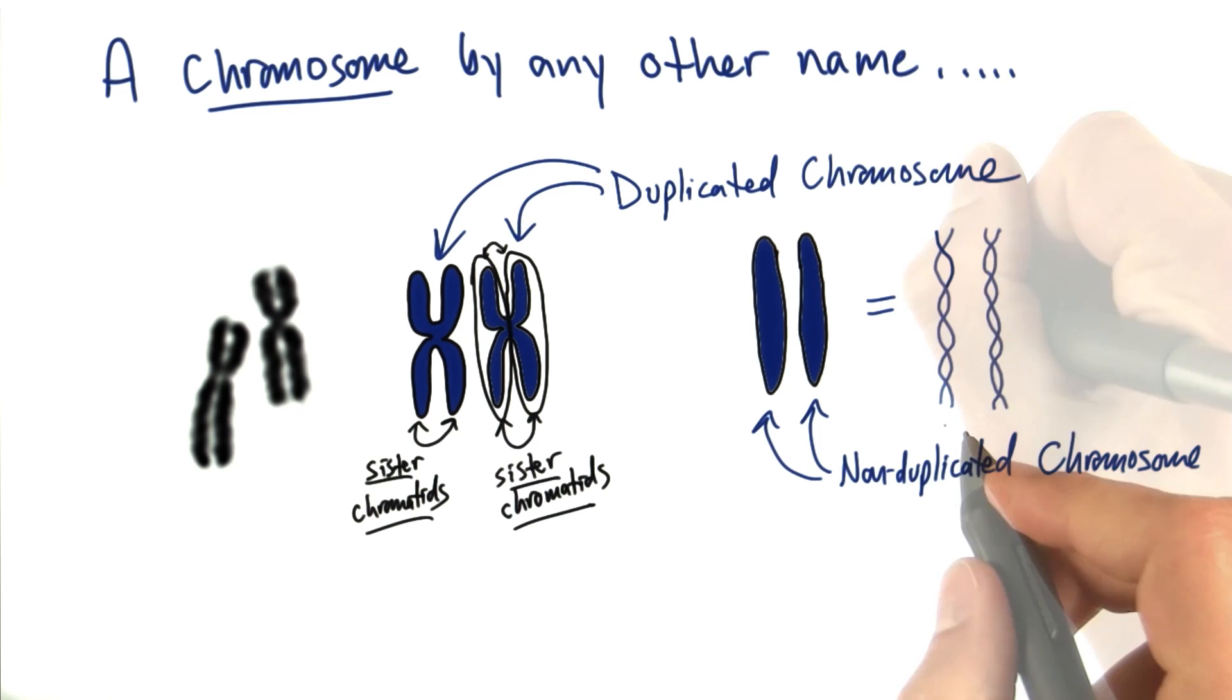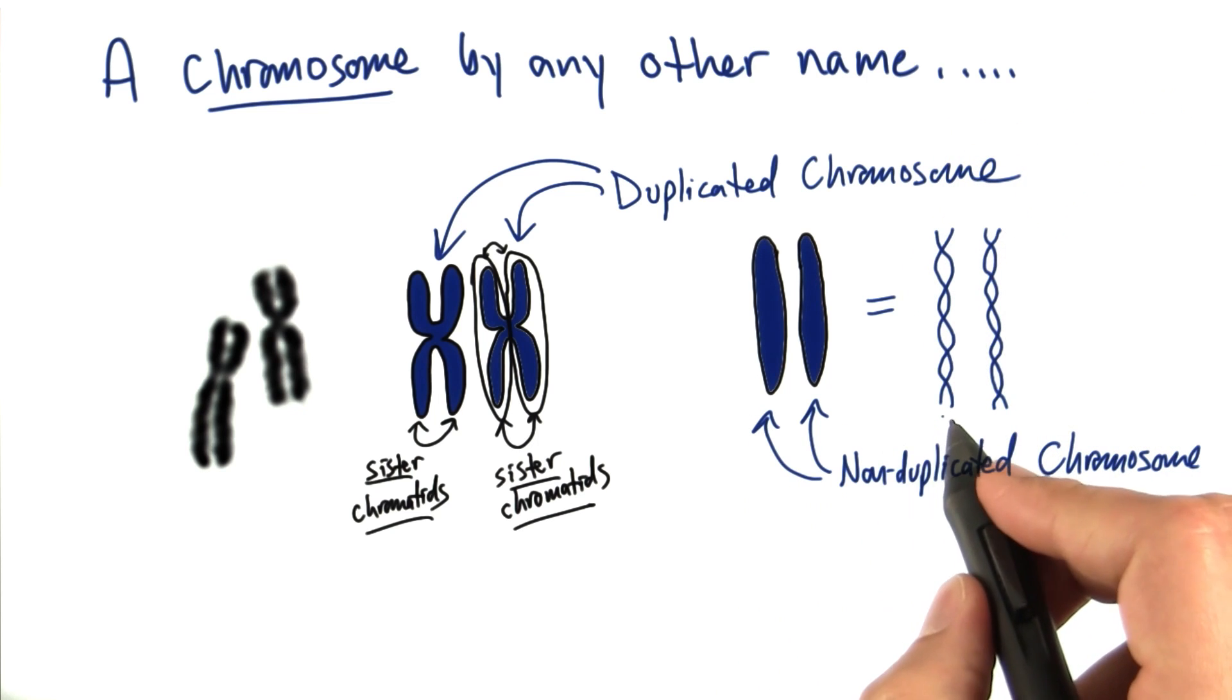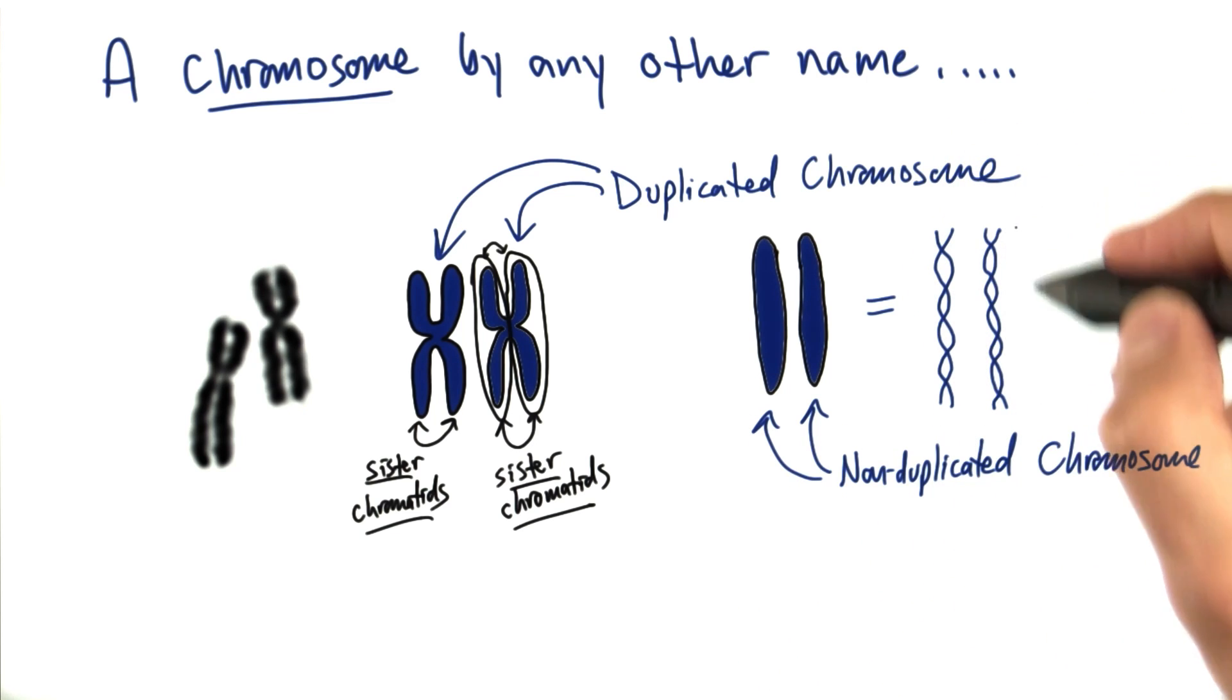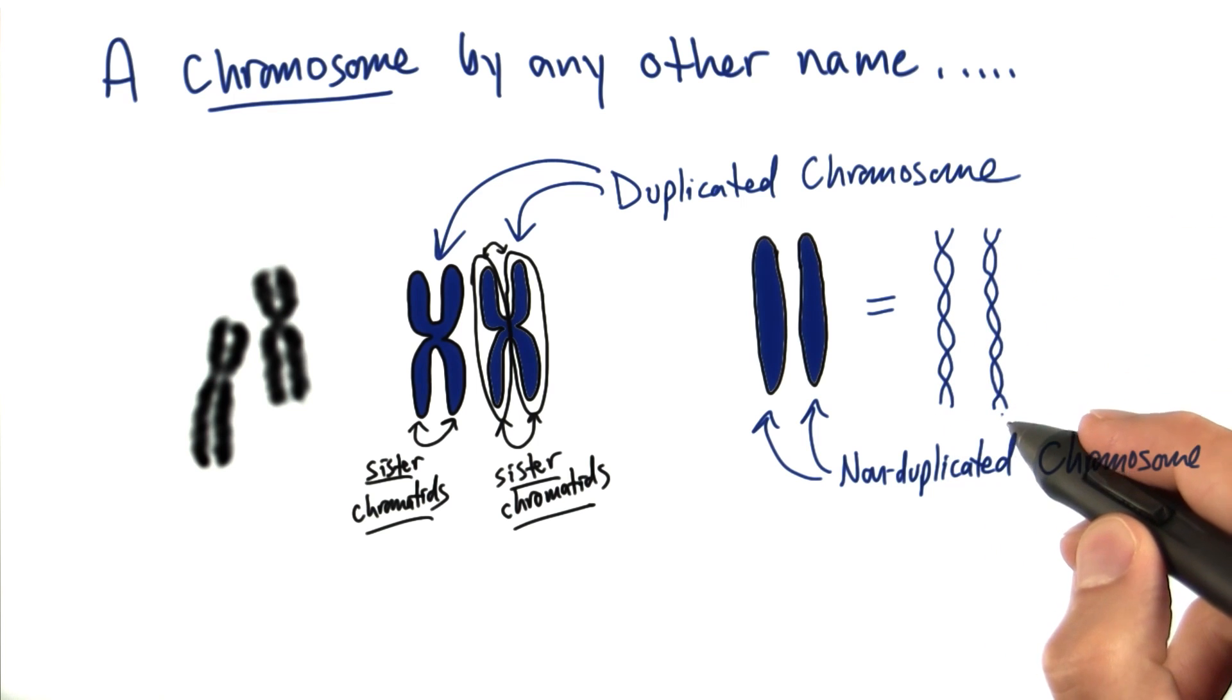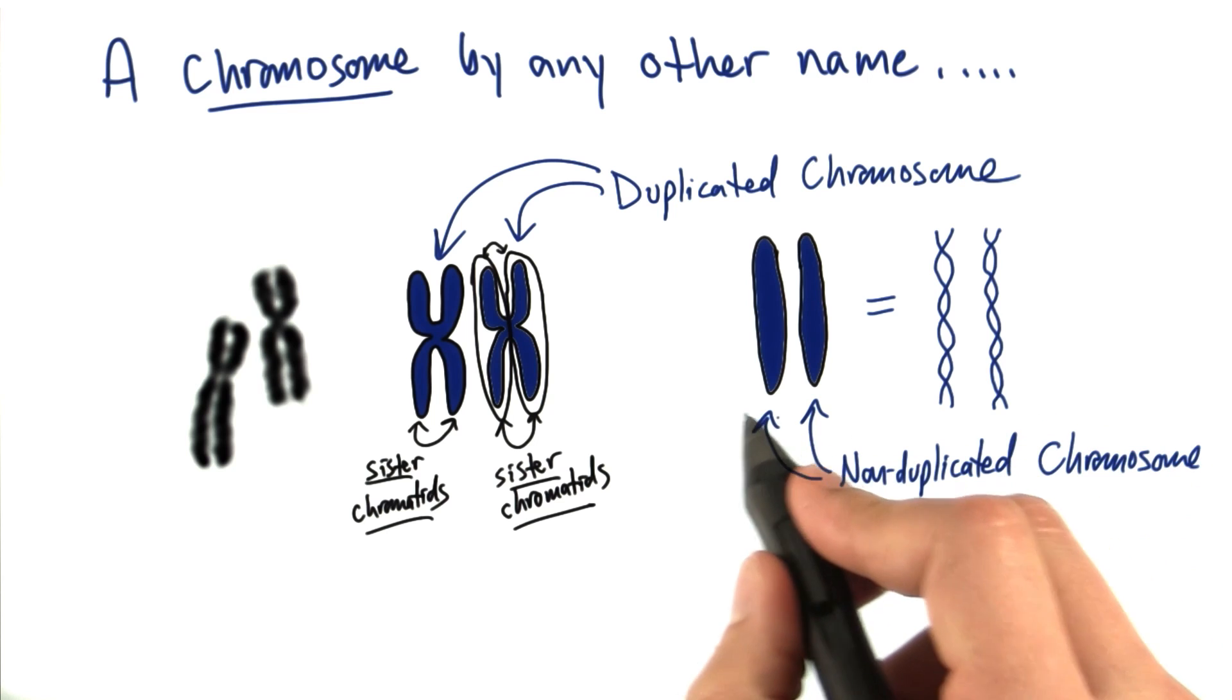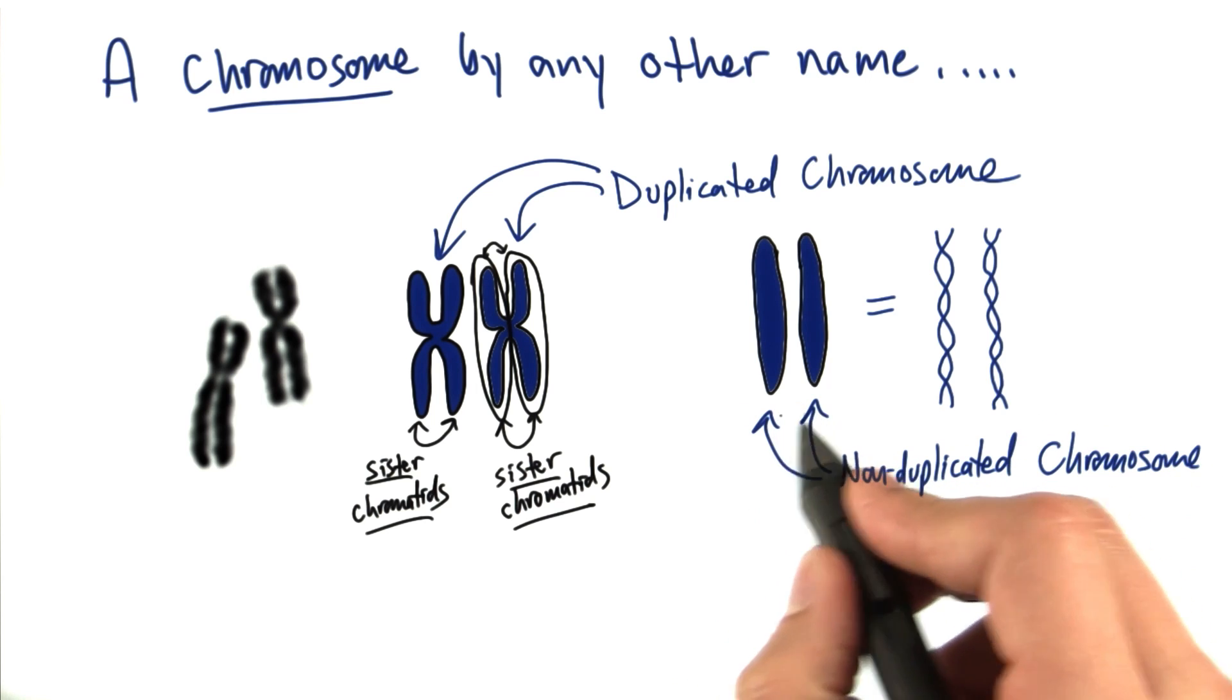Remember, linear chromosomes are just double-stranded DNA in one really long molecule, wrapped up in histone proteins into a higher order structure that looks like the chromosome we're used to seeing.